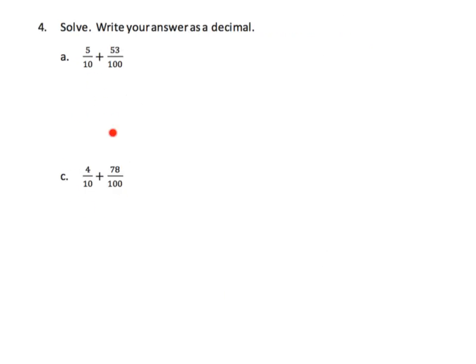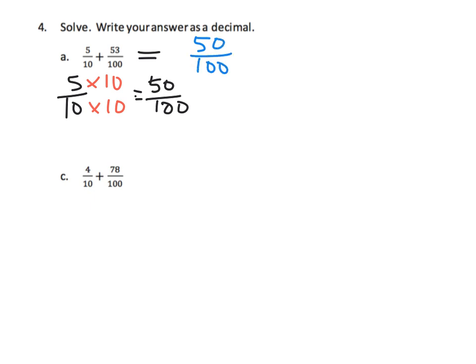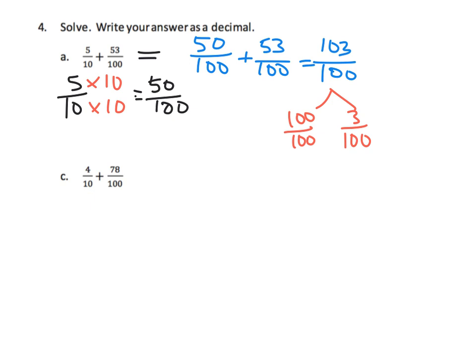This time we're going to go over the 100 mark, so we want to simplify because we need to write our answer as a decimal. Five tenths can be rewritten by multiplying both numerator and denominator by 10, giving 50 hundredths. So our equation becomes 50 hundredths plus 53 hundredths, which gives 103 hundredths. We use a number bond to decompose — taking out 100 hundredths leaves 3 hundredths — so this equals 1.03.